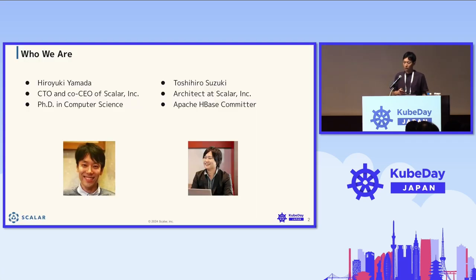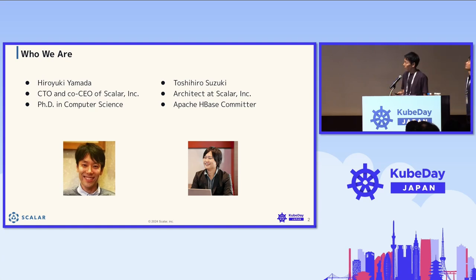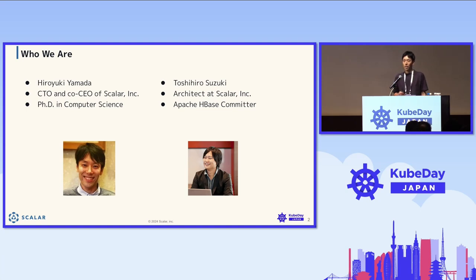I'm Hiroyuki Yamada. I'm the CTO and co-CEO of a company called Scaler, which is a small startup based in Tokyo and San Francisco. We're a database middleware company, and I'm passionate about database systems and distributed systems — I got a PhD from those areas.